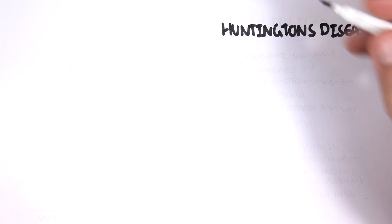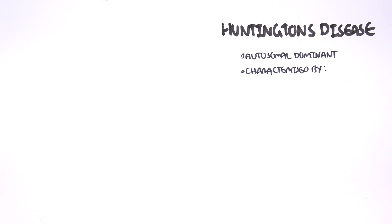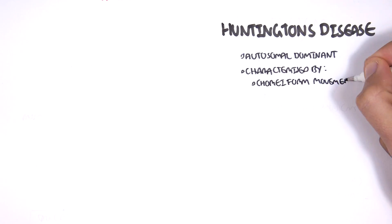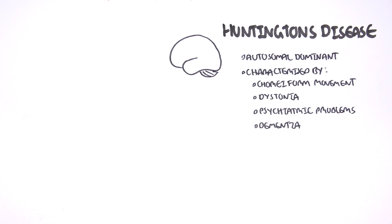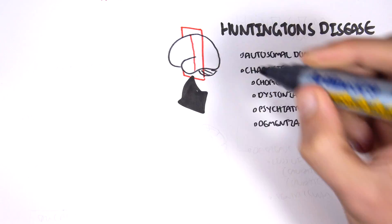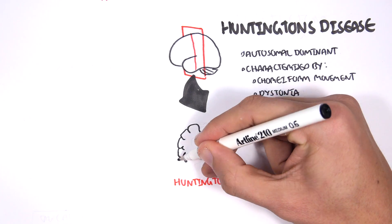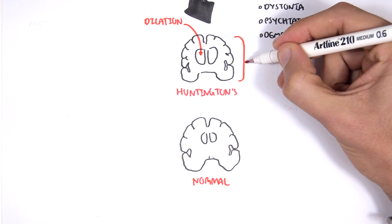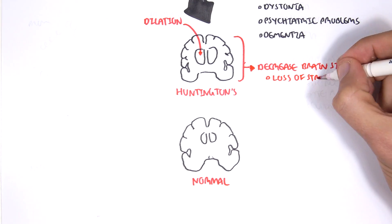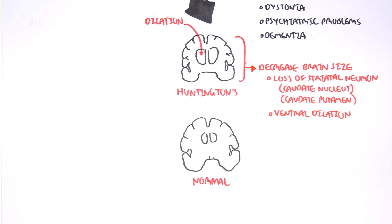The next neurodegenerative disease is Huntington's disease. It is an autosomal dominant disease characterized by choreiform movements, dystonia, psychiatric problems, and dementia. Cutting across sections of the brain, we can see differences from a normal brain: dilation of the ventricles, a decrease in brain size due to loss of striatal neurons — the caudate nucleus and caudate putamen — as well as ventricle dilation.